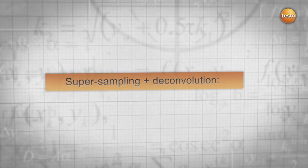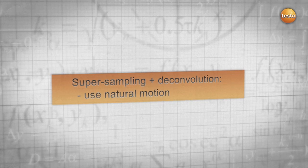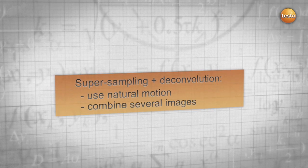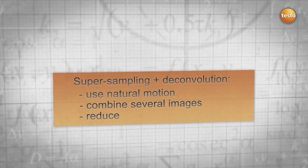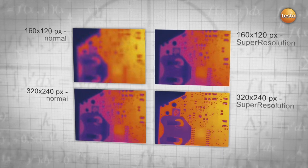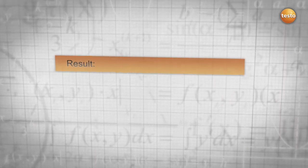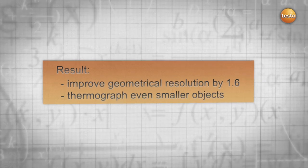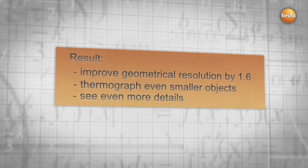The conclusion. With the aid of the natural movement of the hand, super-resolution combines all advantages of super-sampling and deconvolution into a new and revolutionary technology. As a result, super-resolution improves your resolution and allows you to thermograph even smaller objects and see more details.